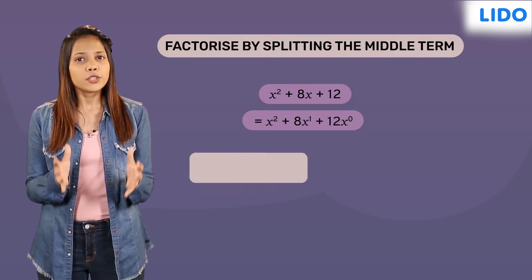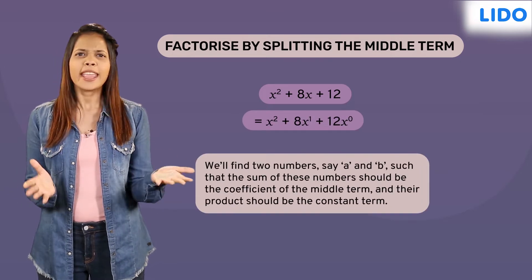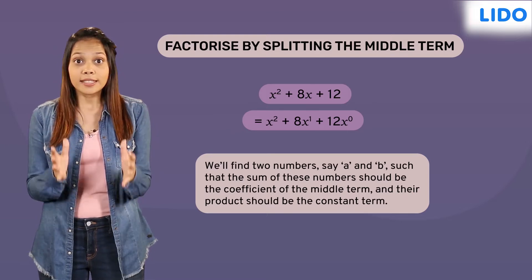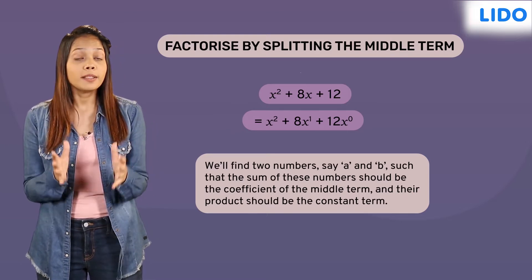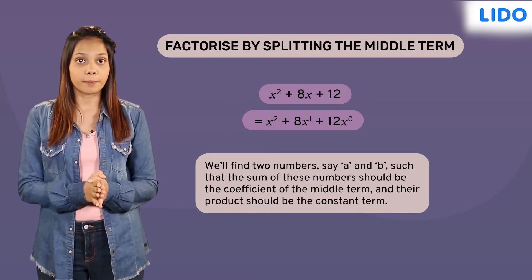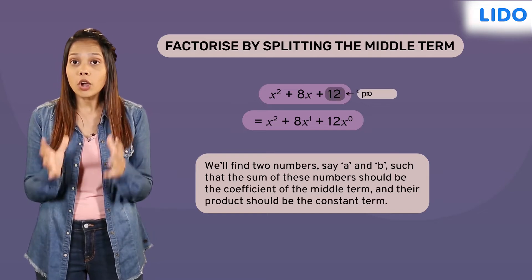Then we will find two numbers, say a and b, such that the sum of these numbers should be the coefficient of the middle term and their product should be the constant term.